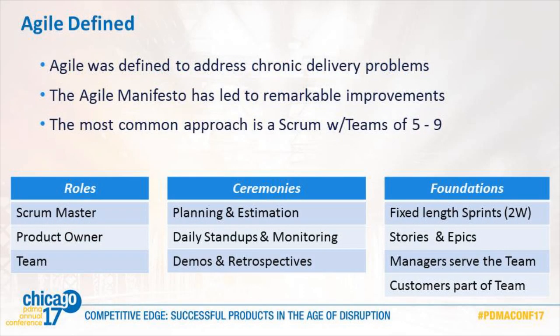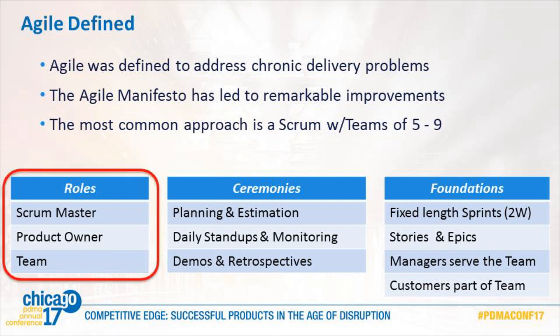Let's first define Agile. I'm going to go quickly because you guys are expert at it. We're not going to talk about Kanban — we're going to talk about the Scrum form of Agile. Basically it's pretty simple. If you look at teams, there are three roles: the Scrum master, who basically eliminates roadblocks; the product owner, which is the proxy for the customer; and then you've got the team. Scrum teams are limited typically to six to nine, and if you need more people on your product effort, you have more than one Scrum team.